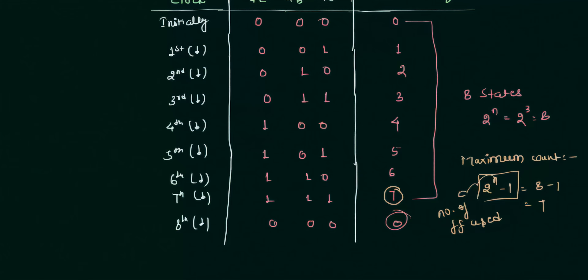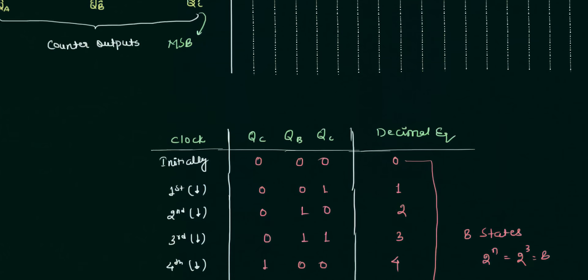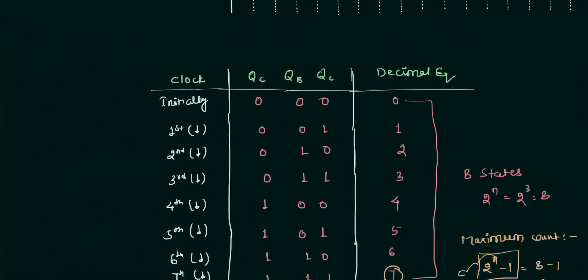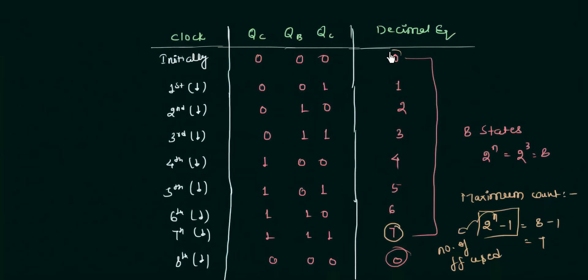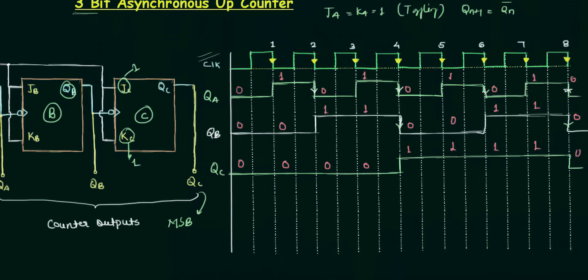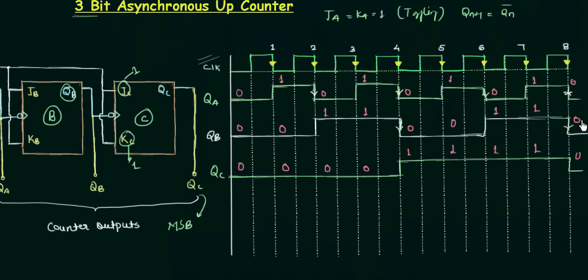This was a simple presentation in which we saw how the 3-bit asynchronous up counter works. It is an up counter because the value increases with every clock pulse — 0, 1, 2, 3, 4, 5, 6, all the way to 7. In the next presentation we will study the 4-bit asynchronous up counter, which works the same way but with more states and a higher maximum count.